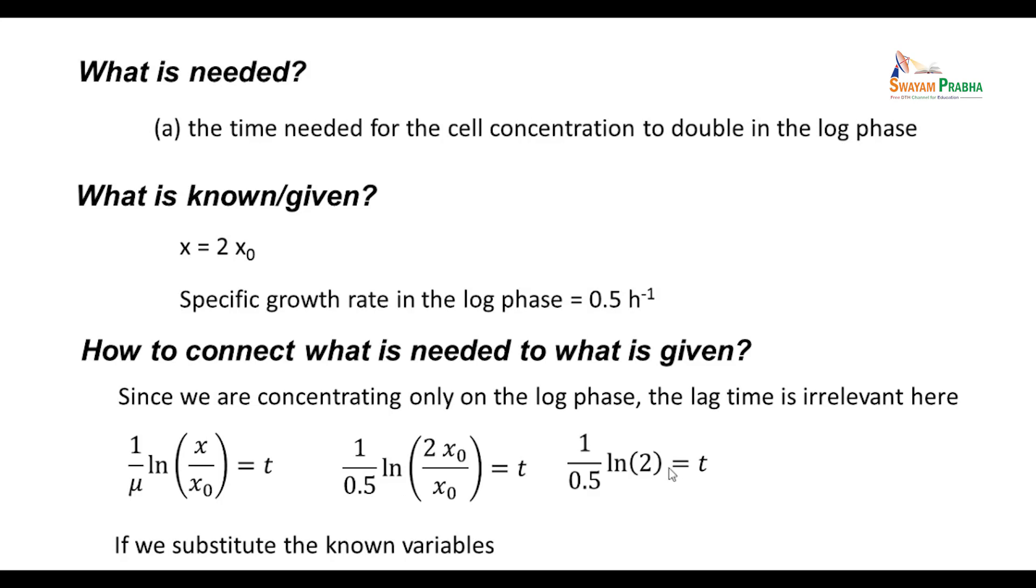ln(2) is 0.693, a nice number to remember. 0.693/μ is the time that it usually takes to double. That would turn out to be t = 1.39 hours.